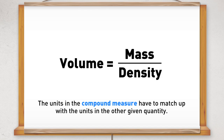For example, if we want to find the volume of an object and the density has been given in grams per centimetres cubed, then the mass must also be in grams. The units for the calculated volume will be centimetres cubed.